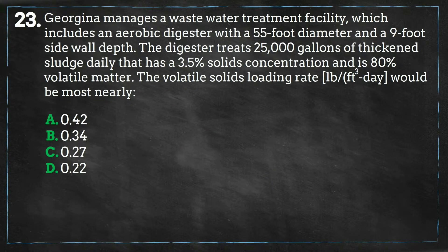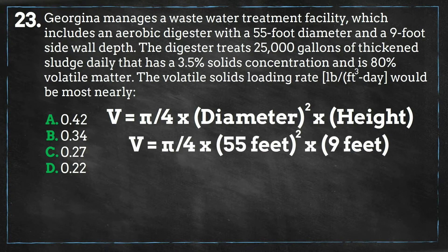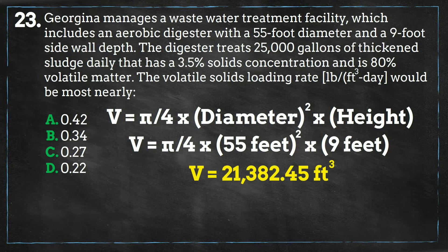To solve this problem, we need to solve for the daily volumetric flow rate of volatile solids as well as the volume of the digester. We have the dimensions of the digester, and knowing the volume calculation will be the cross-sectional area of the digester multiplied by its height. We can solve for this and we get a volume of 21,382 cubic feet.